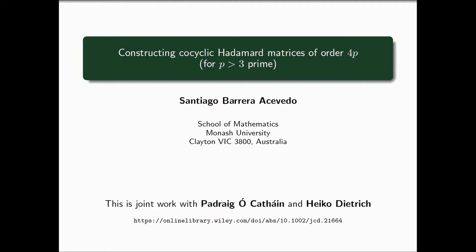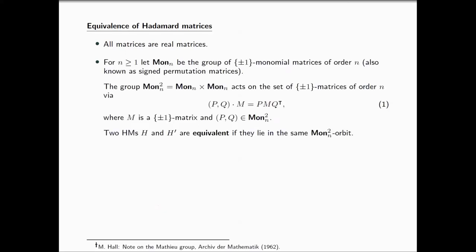Let me start by saying that in my talk, all matrices are real matrices. I'm going to consider the monomial group of plus and minus one monomial matrices of order n, also known as sign permutation matrices. I'm going to take the direct product of two copies of this group and let it act on the set of plus and minus one matrices of order n via the action described here in equation 1. This way, two Hadamard matrices are equivalent if and only if they lie in the same orbit under this action.